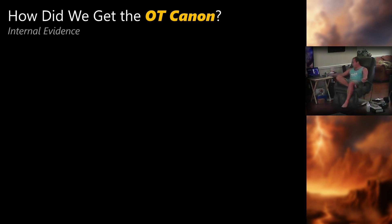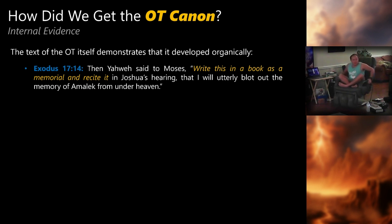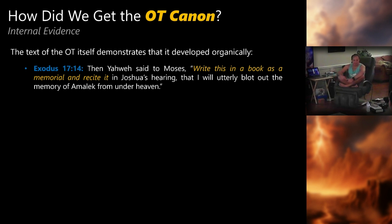The text of the Old Testament itself demonstrates that it developed organically — it was written down early and treated as authoritative almost immediately. We start in Exodus rather than Genesis because the traditional author of the Torah is Moses, and Moses doesn't show up in Genesis. So you wouldn't expect internal evidence of canon development in Genesis — you'd expect to start finding it in Exodus, and that's exactly what you find.